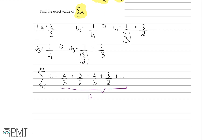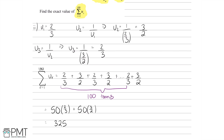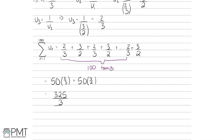We want 100 terms in total, where the pattern ends with 2/3 plus 3/2. Since there are 100 terms and half of them are 2/3 and half of them are 3/2, 50 of them are going to be 2/3 and 50 of them are going to be 3/2. All we have to do is compute 50 times (2/3) plus 50 times (3/2), which gives us 325/3 as our final answer.